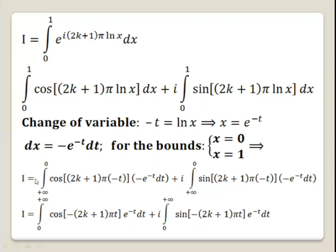Substituting, we get I equals the integral from plus infinity to 0 of cosine of (2k+1) pi times (minus t) multiplied by minus e to the power minus t dt. Similarly, for the second integral, ln x equals minus t, and dx equals minus e to the power minus t dt.